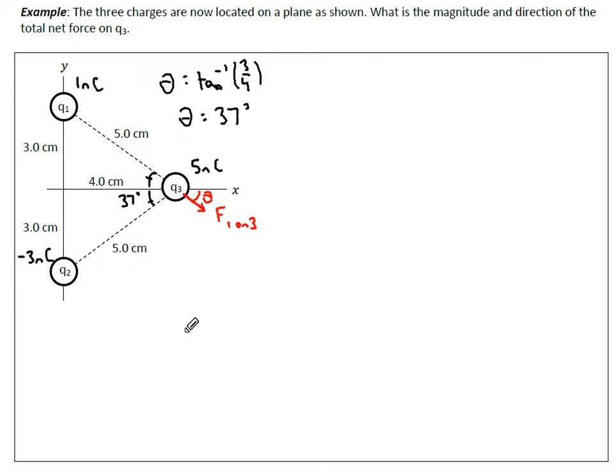F2 though is an opposite charge from Q3. Q2 is opposite charge from Q3, so opposite charges attract. We know that F2 on 3 is going to pull it towards it.